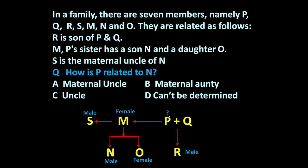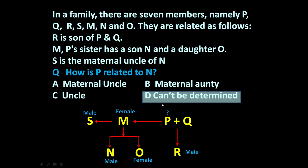The question is: how is P related to N? Whether P is a male member or female member is not clear. So certainly P must be either maternal uncle or maternal auntie of N, but because it is not clear whether P is male or female, this relationship cannot be determined unless we know whether P is a male or female member.